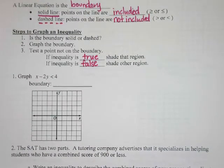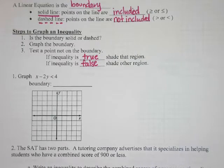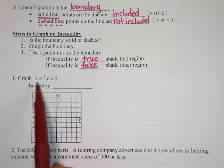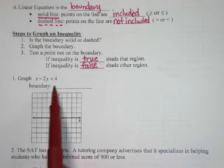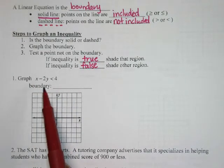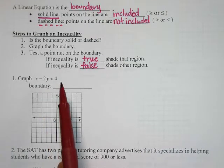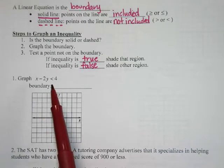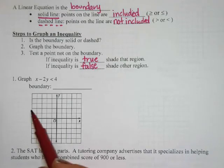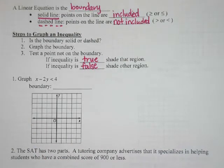Look at number one — it says graph x minus 2y is less than 4. Two things are going on there. First of all, do you remember what form that's in? Standard form, right? I've got the x and the y on the same side and the constant by itself.